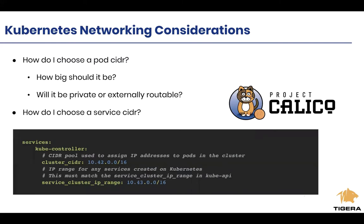Let's talk about a couple of Kubernetes network considerations that a lot of our users look into as they're designing their Kubernetes clusters or migrating them. We're working with a handful of customers who have been running Kubernetes for a while but have hit limitations or issues and want to migrate to Calico for a more optimized, performant, and scalable solution. Some questions you're probably facing: how do you choose a pod CIDR? How big should it be? Will it be private or externally routable? And how do you choose a service CIDR?